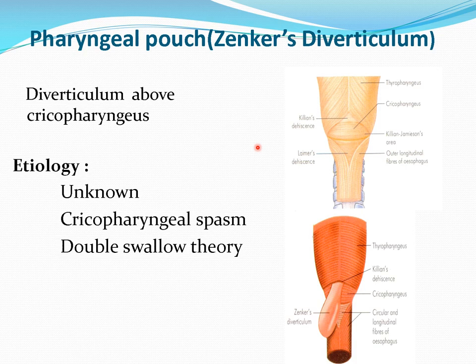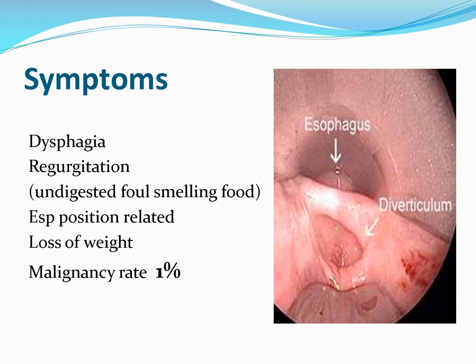Symptoms of Zenker's diverticulum include difficulty in swallowing due to pressure of the diverticulum on the esophagus from behind, and regurgitation of undigested, foul-smelling food into the mouth — especially when changing position. Malignancy can sometimes be seen inside the wall of the pharyngeal pouch, so endoscopy and biopsy are required.